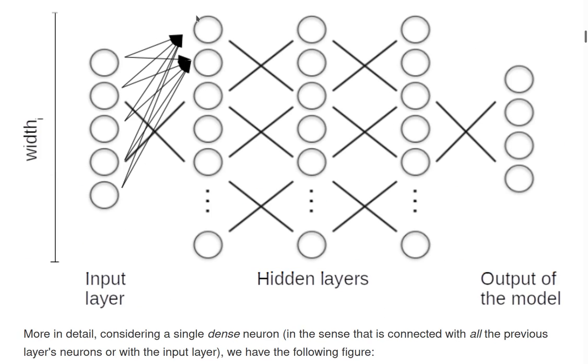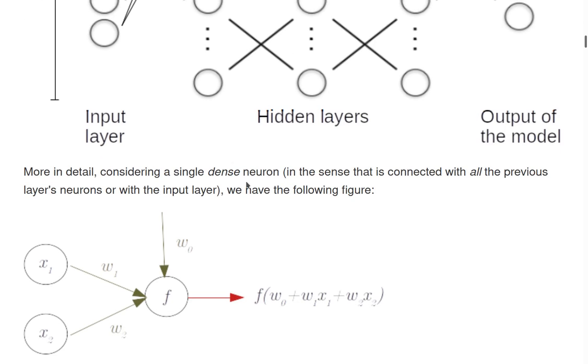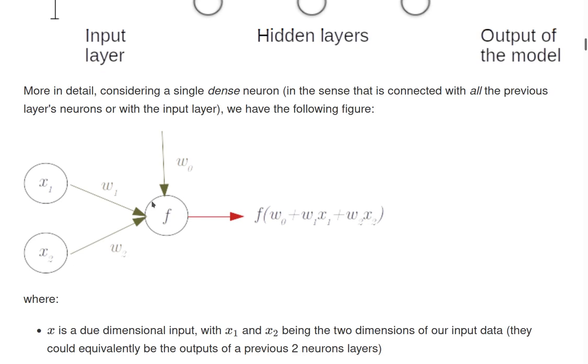If we consider one single of these circles, we call these neurons to make the connection with the metaphor of the brain, but we call them simply nodes. So considering a single dense neuron, dense in the sense that it's connected with all the previous neurons in the previous layer or directly with the data, we have a structure of this type. So here is our data, or again, the value at the previous layer.